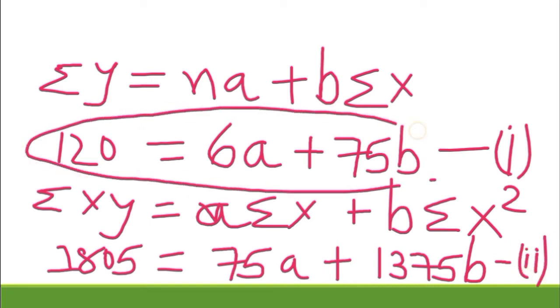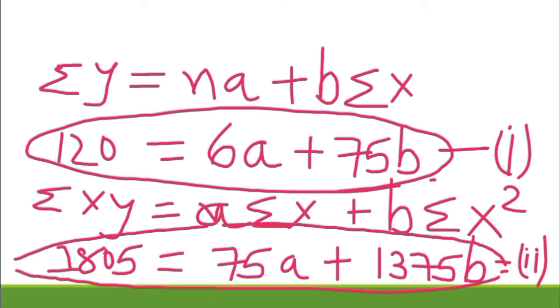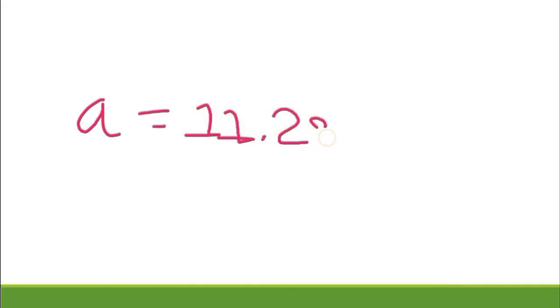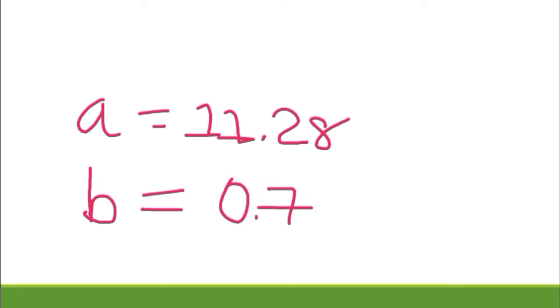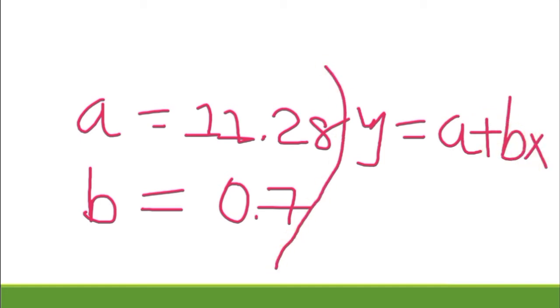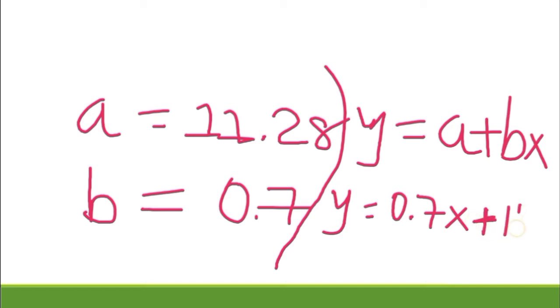You can solve both these equations easily on your calculator — I will also create a separate video on how to solve equations using a calculator. On solving both equations we get a = 11.28 and b = 0.7. Substituting these values into y = a + bx, we get y = 0.7x + 11.28, which is the best fitting straight line to the given data.